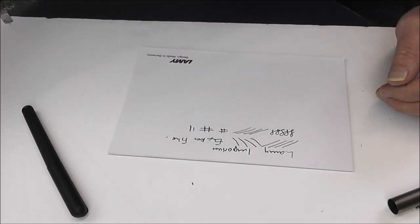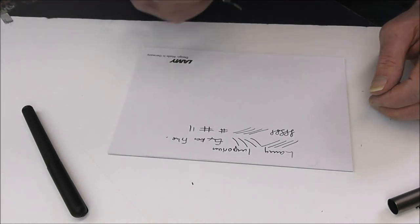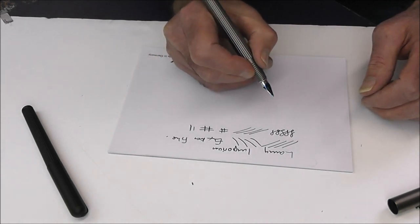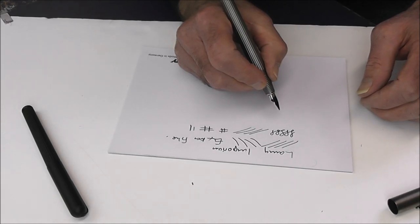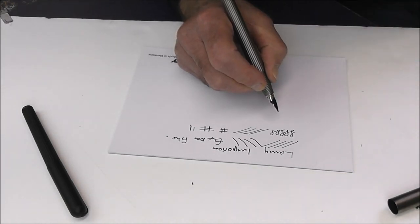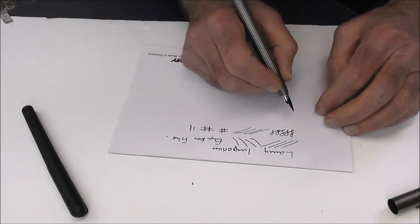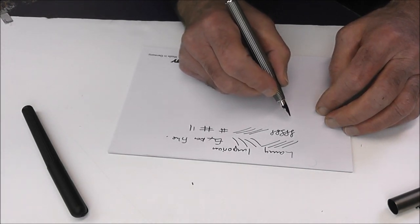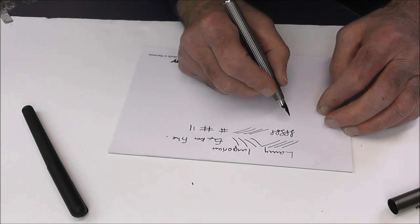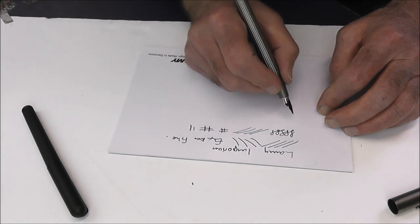And there are two oblique nibs for those of you that like that sort of thing. Lamy is one of the few manufacturers to continue to make oblique nibs, which for people who rotate the pen—so if they don't hold it quite square onto the paper—give a much more effective sweet spot for them. So the nib will feel smoother and also it will give an interesting degree of line variation.